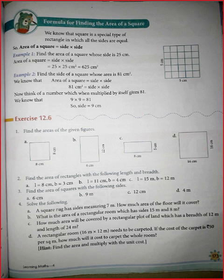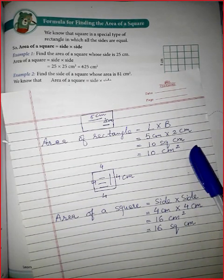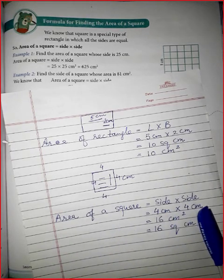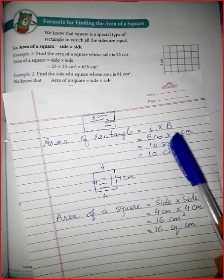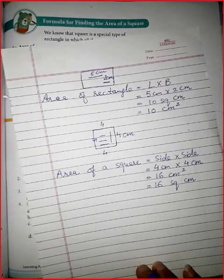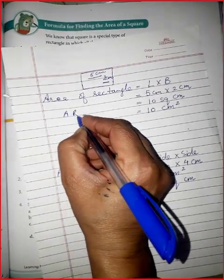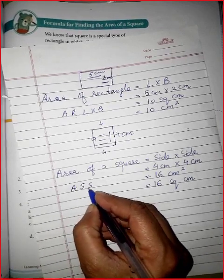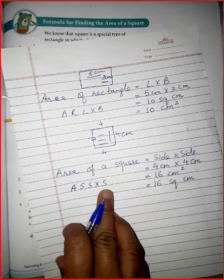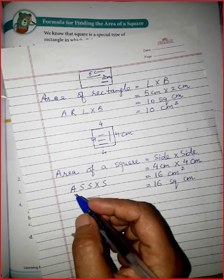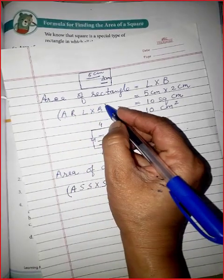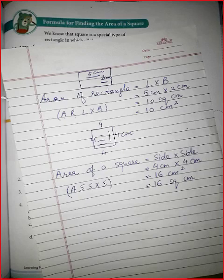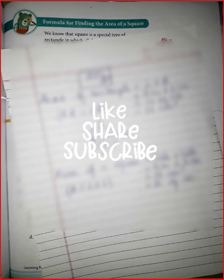Learn properly what the formulas of perimeter are and what the formulas of area are. For area: rectangle is l into b, and square is side into side. You can make acronyms to remember — 'ARL into B' for area of rectangle, and 'S×S' for area of square. Do not mix up area and perimeter — both are different with different formulas. Thank you, have a nice time. Don't forget to like, subscribe, and share!